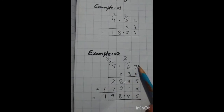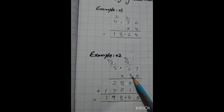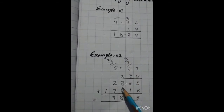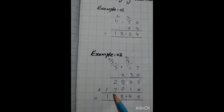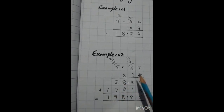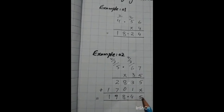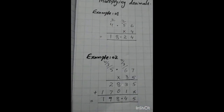Now we read the table of 3: 7 times 3 is 21, write 1 and carry 2. Then 6 times 3 is 18 plus 2 is 20, write 0 and carry 2. Then 5 times 3 is 15 plus 2 is 17. Now we add both rows: the answer digits are 9, 8, 4 and 1. Since the question is a hundredths number — two digits after the decimal — the answer should also have two digits after the decimal. Now complete this exercise in your copy.